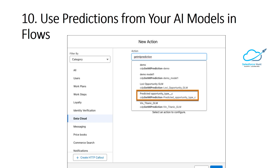Another feature is using predictions from your AI models in a flow. Once you create a new action, you can see the Data Cloud option. Under Data Cloud, you can select your prediction for your custom object or standard object.